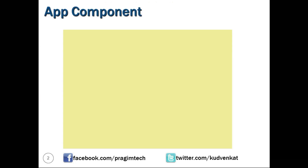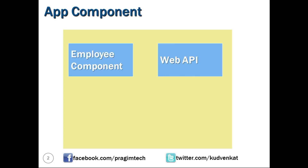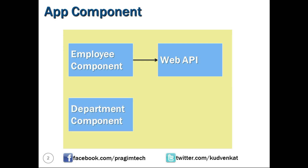Assume that we have an app component in our application and this app component makes use of two other components: one is the employee component and the other one is the department component. The employee component connects to a web API, fetches the list of employees when the component is mounted, and displays the list. Similarly, the department component connects to a web API, fetches the list of departments when the component is mounted, and displays the department data.